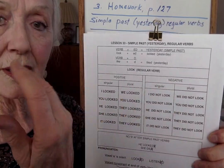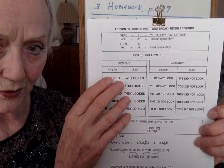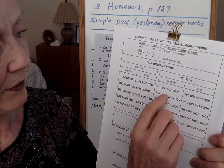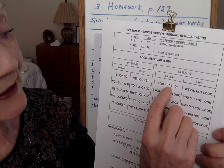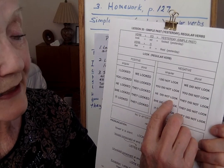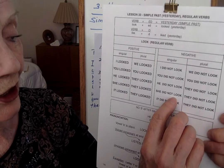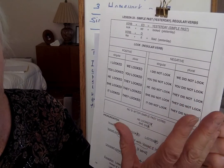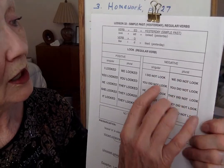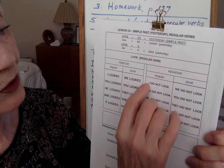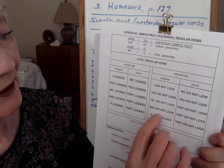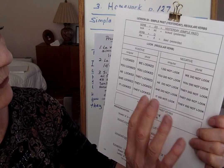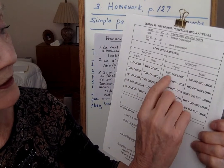In the negative, usamos do pero el pasado. Did es el pasado para do — hacer, hizo, hice. So: I did not look, you did not look, he did not look, she did not look, it did not look, we did not look, you did not look, they did not look — mismo. The only thing that changes is the person: I, you, he, she, it. Did not look — mismo. And no hay ese after simple past — no -S.